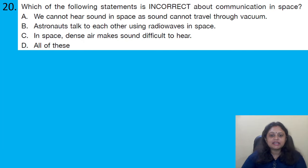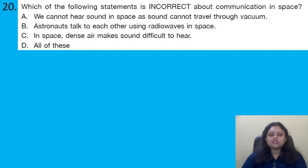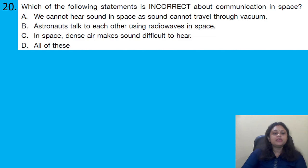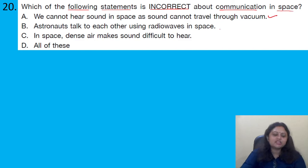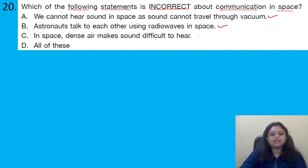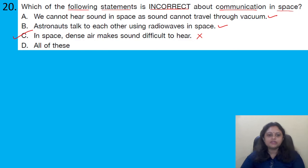Which of the following statements is incorrect about communication in space? Option A: we cannot hear sound in space as sound cannot travel through vacuum — correct. Option B: astronauts talk to each other using radio waves in space — correct. Option C: in space, dense air makes sound difficult to hear — incorrect, as there is no air/atmosphere in space. So the correct answer is option C.